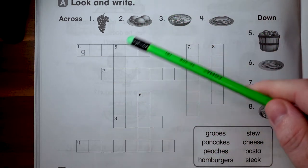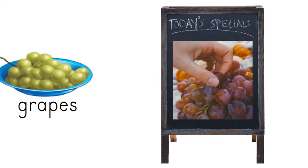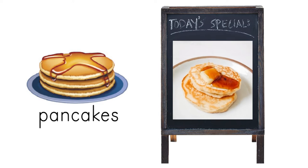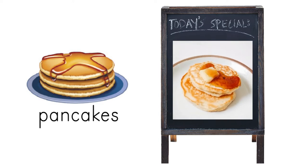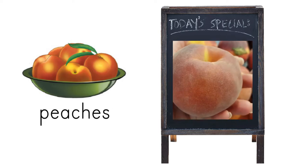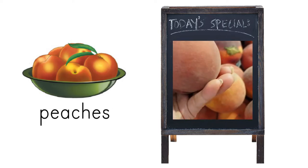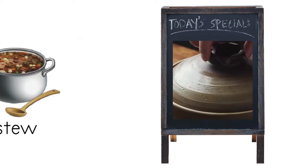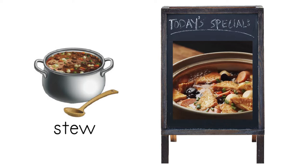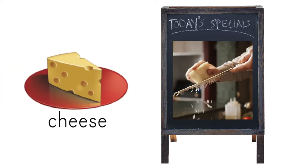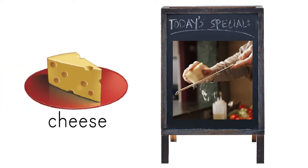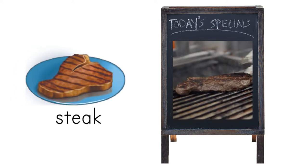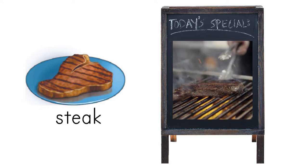First though, let's remember what these words are. Grapes, grapes, grapes. Pancakes, pancakes, pancakes. Peaches, peaches, peaches. Hamburgers, hamburgers, hamburgers. Stew, stew, stew. Cheese, cheese, cheese. Pasta, pasta, pasta, pasta. Steak, steak, steak.